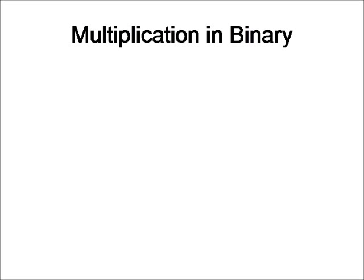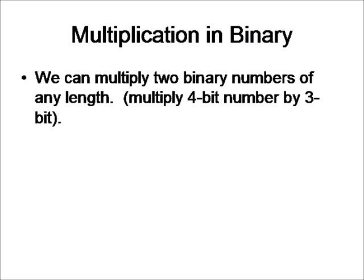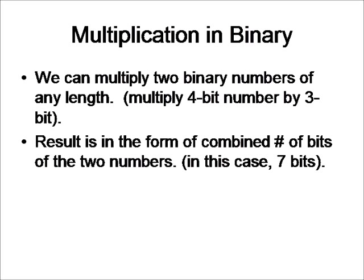Now multiplication is slightly different from addition and subtraction. We can multiply two binary numbers of any length. Rather than addition and subtraction, we had to make sure that they were the same length. In this case, we can multiply a 4-bit number by a 3-bit number, and the result would be in the form of the combined number of bits, which in that case is 7 bits.